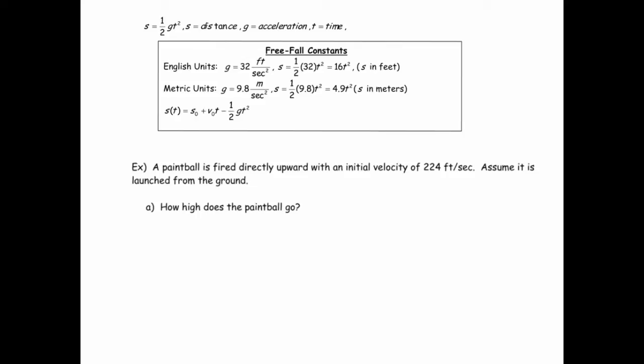So the scenario is a paintball is fired directly upward with an initial velocity of 224 feet per second, and we're assuming it's launched from the ground. So the first question we're asked is, how high does the paintball go?